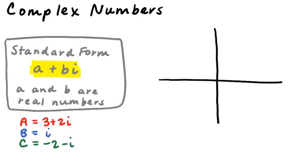You're going to be asked to plot complex numbers on the quiz, the test, and on the CLEP test. To start, the horizontal axis is what we've considered as the number line up to now — where we've drawn number lines to look at where functions are positive or negative and sketched solutions to linear inequalities. This is the set of real numbers; this is the real axis.